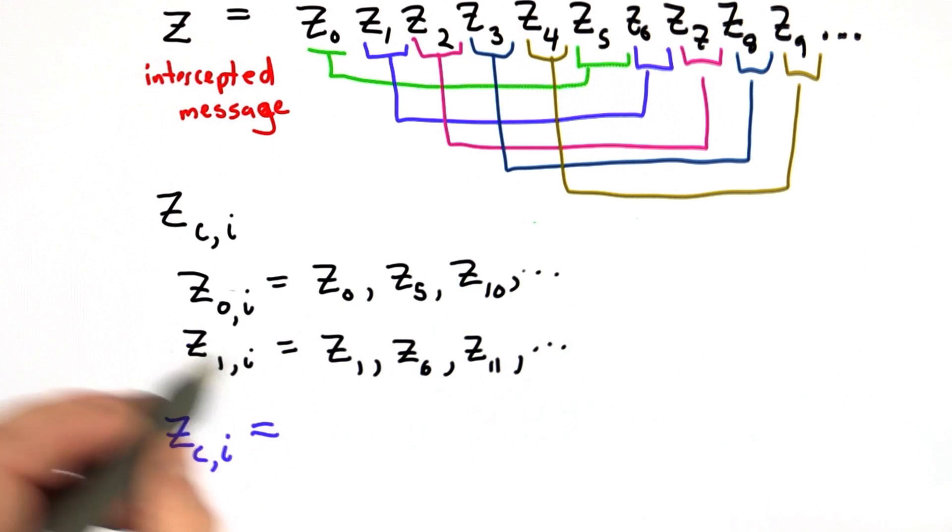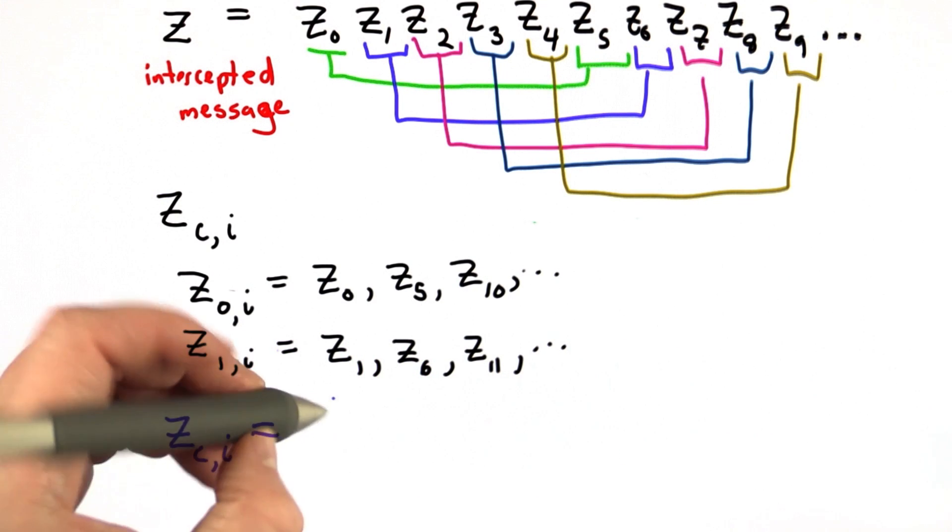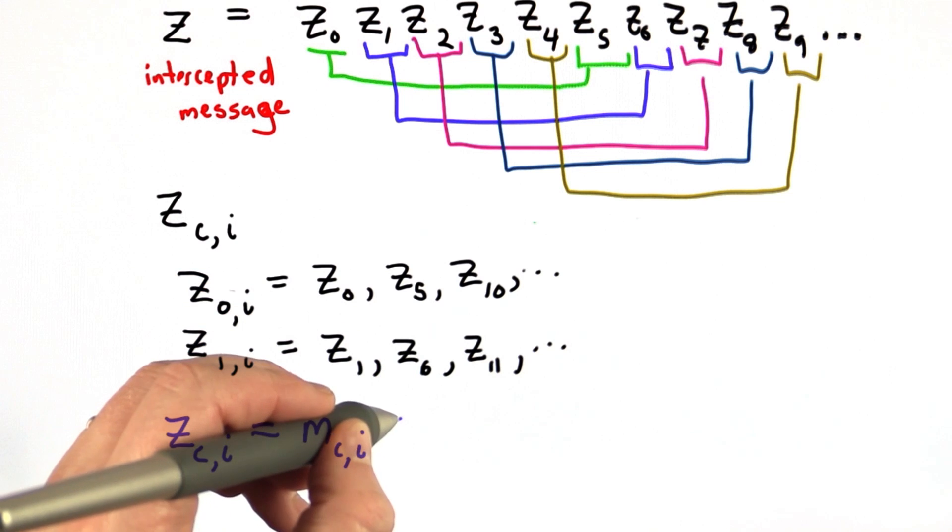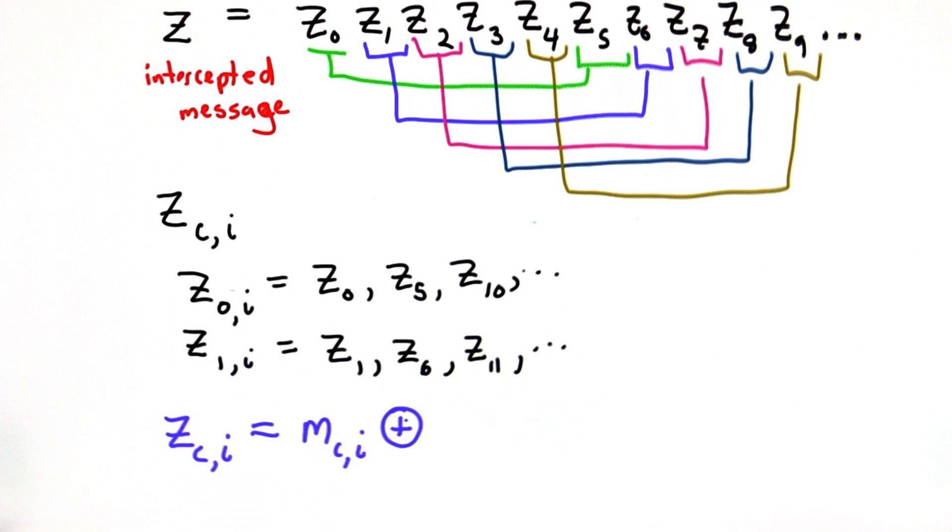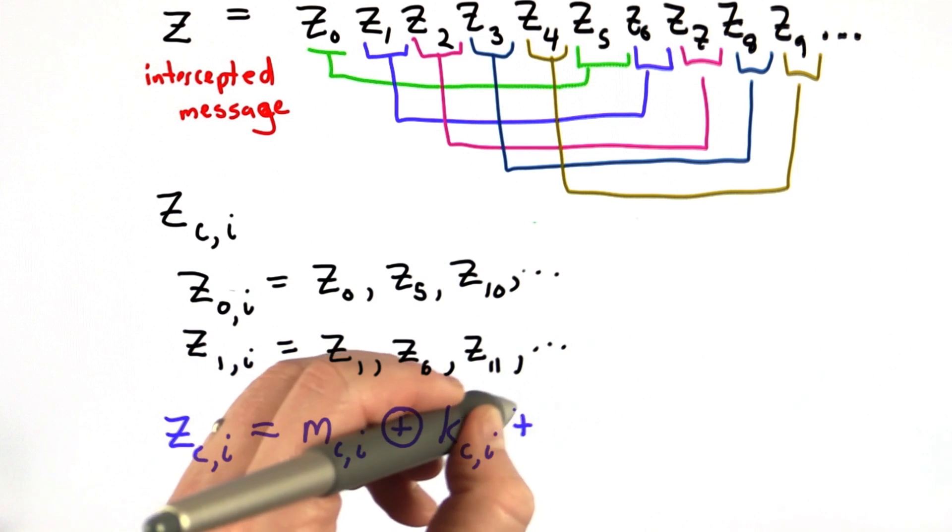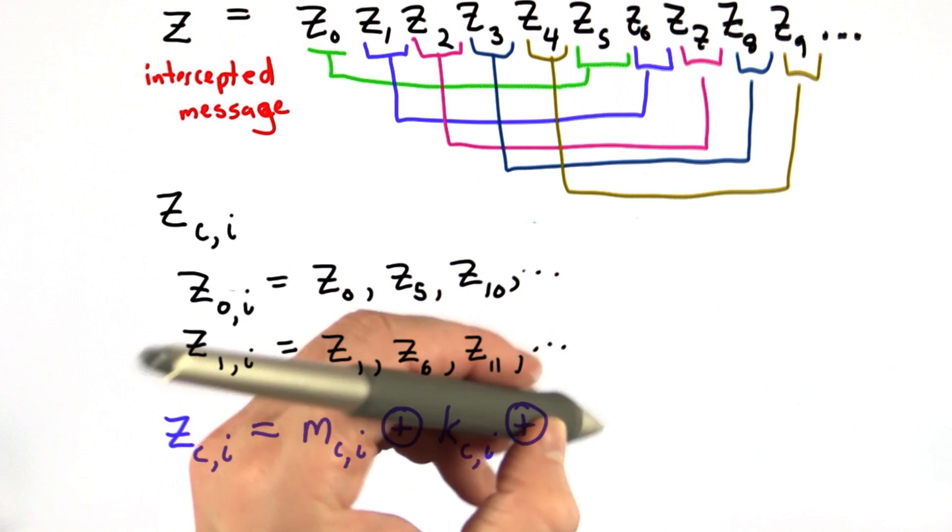The value of each of these depends on the message. It also depends on the outputs of the k wheels. And it is also XORed with outputs of the s wheels.